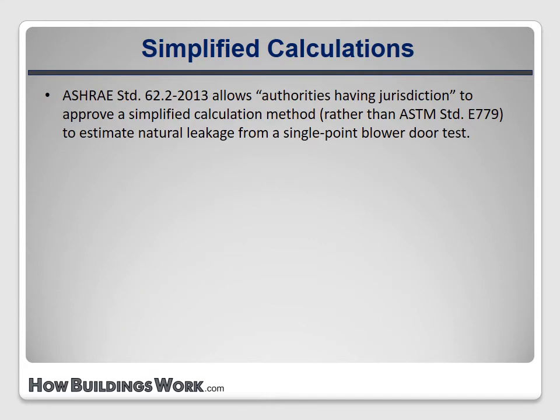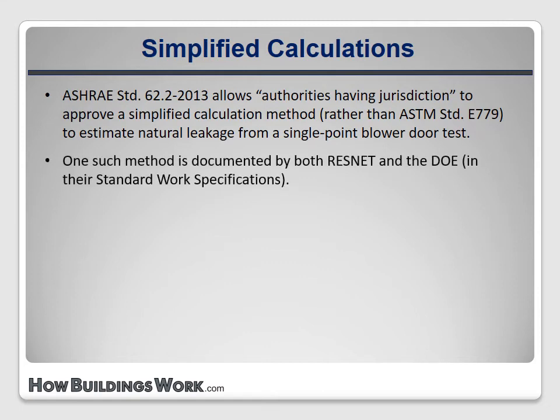Fortunately, ASHRAE 62.2 allows authorities having jurisdiction the option to approve a simplified calculation method. It specifically mentions the method included in the ResNet Mortgage Industry National Home Energy System standard. Most programs have adopted or at least accepted the simplifications included in the ResNet calculations, and BPI includes this simplification in BPI 1200. I certainly wish the ASHRAE committee would explicitly endorse the simplification in the standard rather than requiring calculations and testing that no sane architect, energy auditor, or rater would go through on every single house.